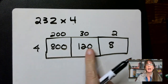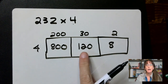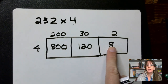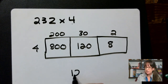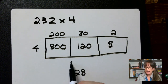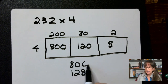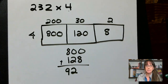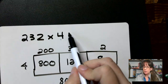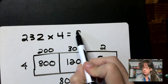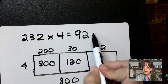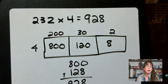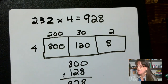Now all we have to do is add these up. 120 plus 8 is 128. 128 plus 800 gives me 928. So when I multiply these two things together, I get 928. That's the box method of multiplication, and knowing that is going to help with your division.